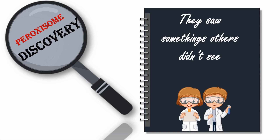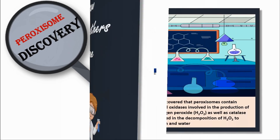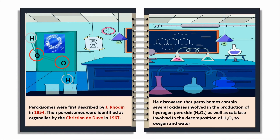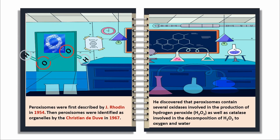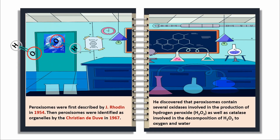Proxysome Discovery — they saw something others didn't see. Proxysomes were first described by J. Rodin in 1954. Then, proxysomes were identified as organelles by de Quistendidorf in 1967. He discovered that proxysomes contain several oxidases involved in the production of hydrogen peroxide (H2O2), as well as catalase involved in the decomposition of H2O2 to oxygen and water.